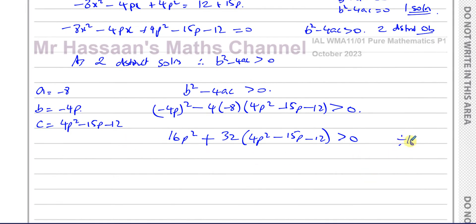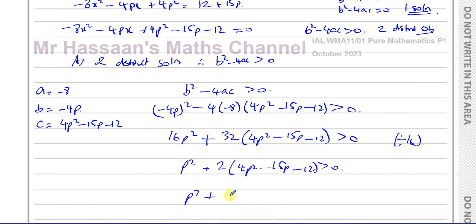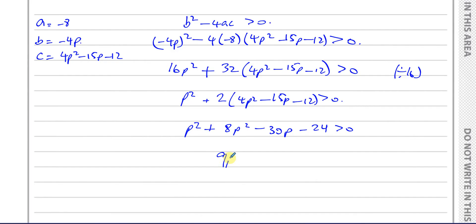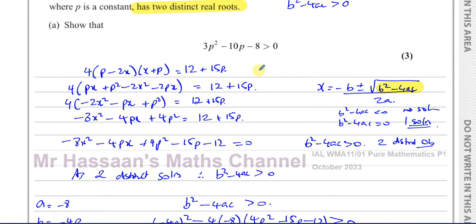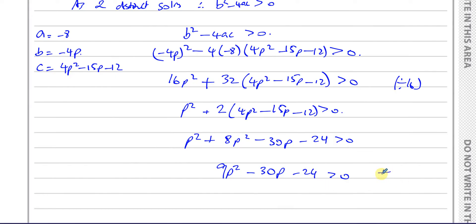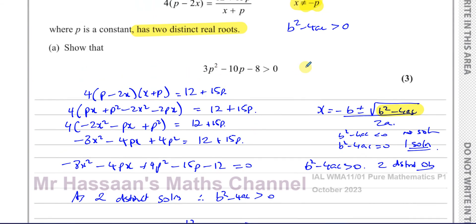To simplify, divide through by 16, giving: p² plus 2 times (4p² minus 15p minus 12) is greater than zero. Multiplying out: p² plus 8p² minus 30p minus 24 is greater than zero, which gives 9p² minus 30p minus 24 greater than zero. All terms are divisible by 3, so dividing by 3 gives 3p² minus 10p minus 8 greater than zero.